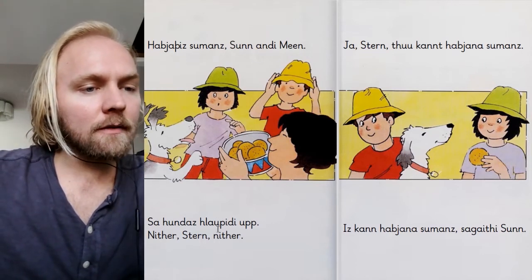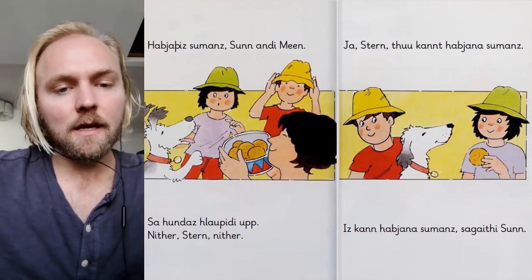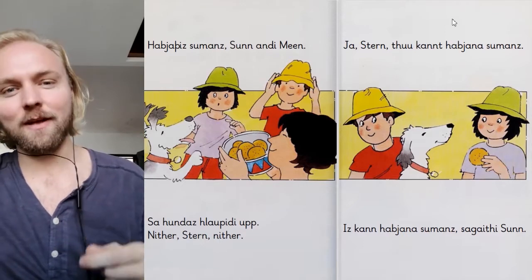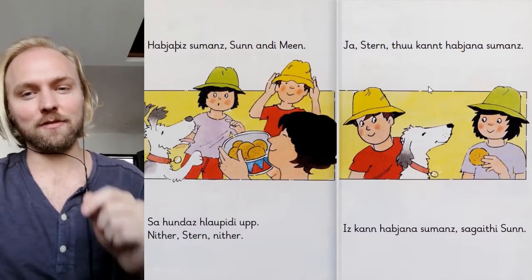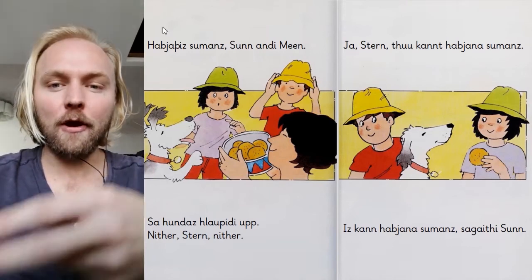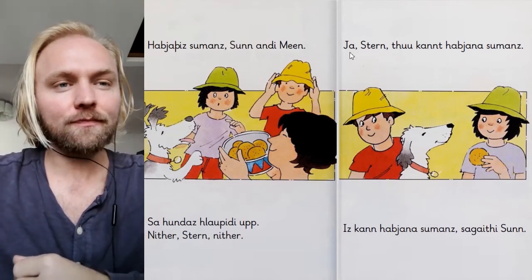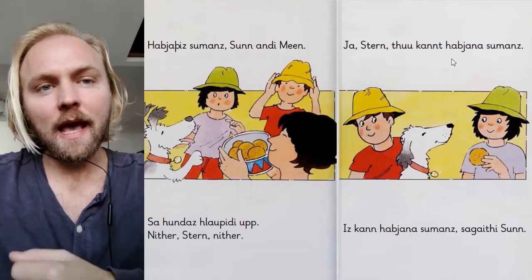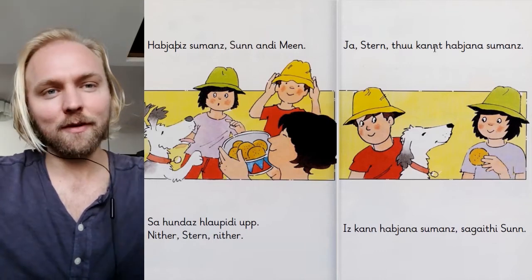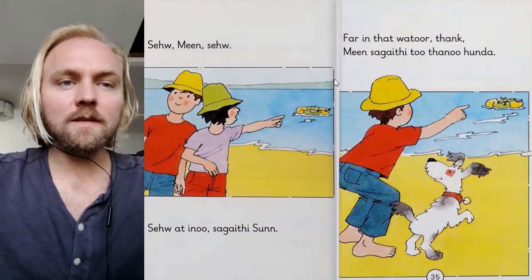Here with this summer — sun says to moon: 'you can have some.' This part is tricky — it might look like 'he cannot have some' or 'you cannot have some,' but actually she's saying 'you can have some' — don't be impatient. 'Have some' in the dual imperative for two people. The dog leaps up — 'down, star, down.' Star, you can have some. 'He can have some,' says sun. 'He cannot,' says moon — remember 'can't' means 'can.'